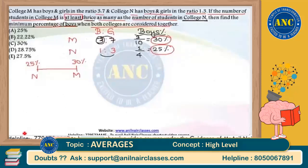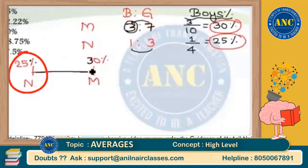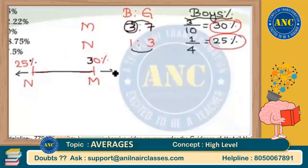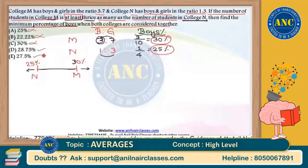Since the average always lies between the lowest and highest values, the combined boys percentage will be strictly between 25% and 30% — not equal to 25, not equal to 30. Therefore, any answer option that is 25% or less (like 22.22%) is ruled out, and exactly 30% is also ruled out. So the answer is either 28.75% or 27.5%.